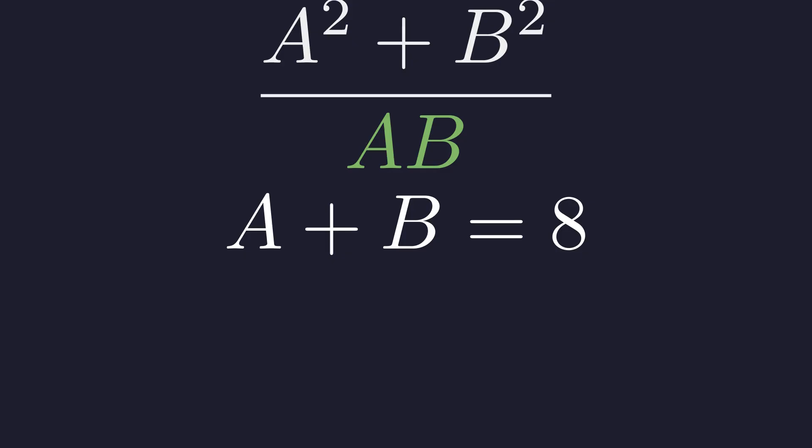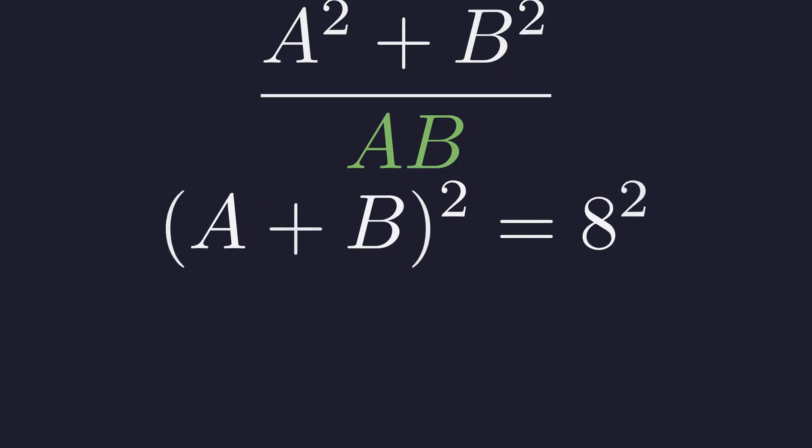To find that, we'll use the other equation. A plus B equals 8. If we square both sides, we'll get the terms we're looking for. The square of A plus B equals 8 squared. Which is 64.